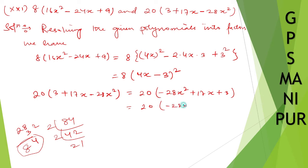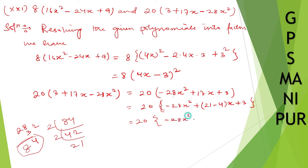So we have minus 28x² plus 21x minus 4x plus 3.